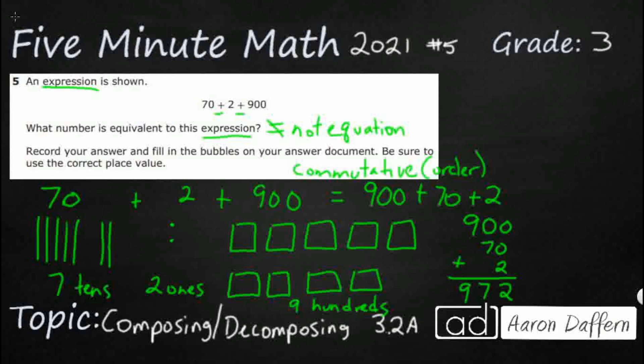So it looks like our answer might be 972. Let's see if that matches our picture here. We've got 900s. That's 900. And we've got 7 tens, yes, and 2 ones. So we've got 972.